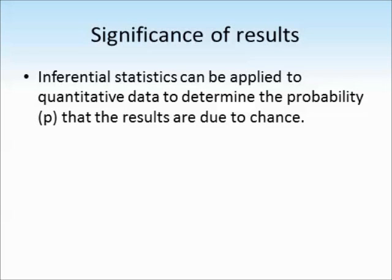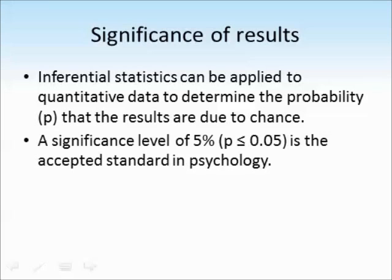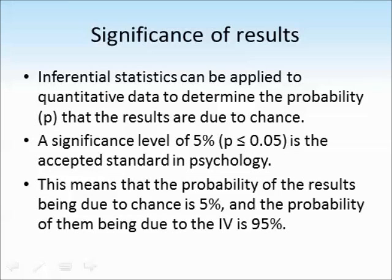The final thing that you need to know is how psychologists describe the significance of their results. So inferential statistics can be applied to quantitative data to determine the probability that the results found are due to chance. And the letter P is used to represent probability. A significance level of 5% is the accepted standard in psychology. And this can be written as P is less than or equal to 0.05. This means that the probability of the results being due to chance factors is 5%, and the probability of them being due to the manipulation of the independent variable is 95%.